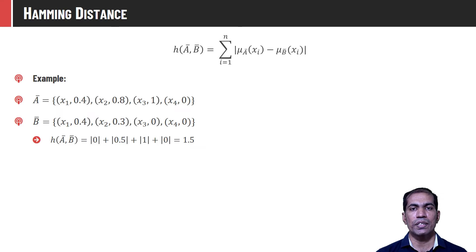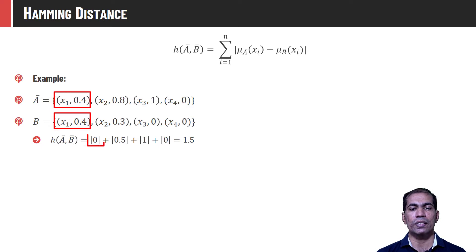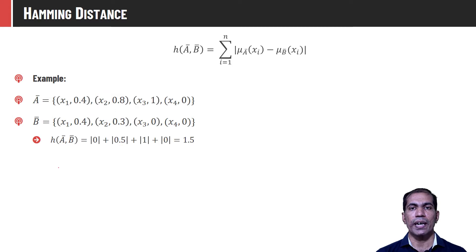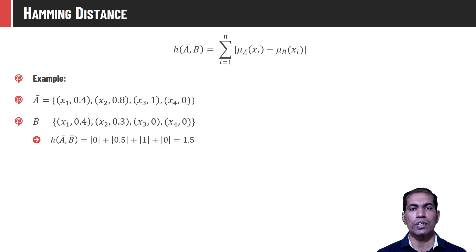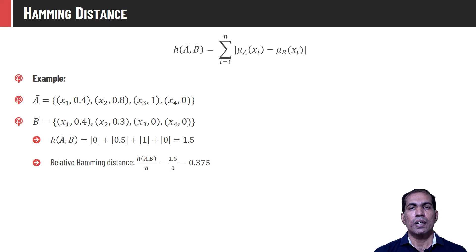The Hamming distance for a given set is computed by taking the pairwise absolute difference of membership values. For x1: |0.4 − 0.4| = 0; for x2: |0.8 − 0.3| = 0.5; for x3: |1 − 0| = 1; for x4: |0 − 0| = 0. So the total Hamming distance is 1.5. The relative Hamming distance is simply the average: 1.5 / 4 = 0.375.